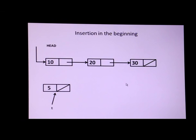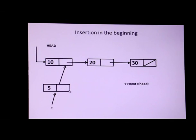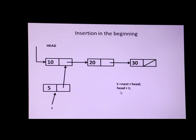Suppose I am going to insert node T containing the value 5 into the list as the starting node. That means the address part of T should have the address of 10. So we can write T.next = head. After the execution of this line, the next part of T (that is, node 5) will contain the address of node 10. Now the pointer variable head should have the address of 5, so we can write head = T.